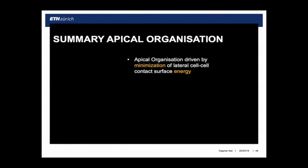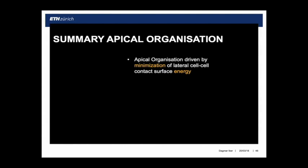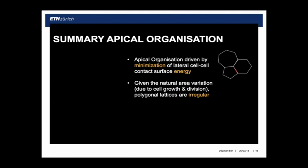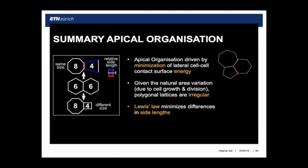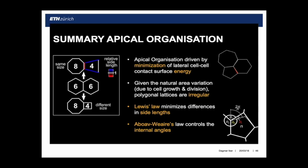In summary for the apical organization: the apical organization minimizes the lateral cell surface contact energy. You have area variability arising from cell growth and cell division — not topology — which creates irregular lattices. Lewis's law emerges to make side lengths as equal as possible, and Aboav-Weaire's law emerges to get angles closest to those of a regular polygon.